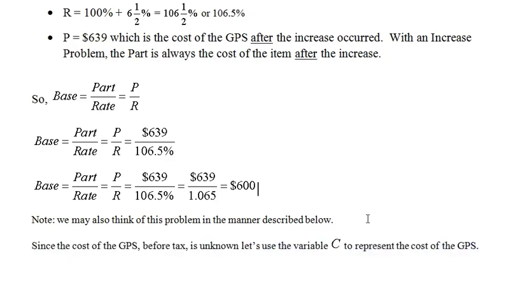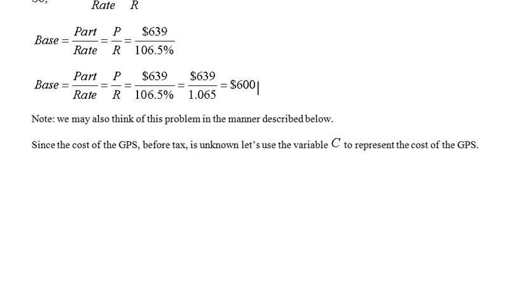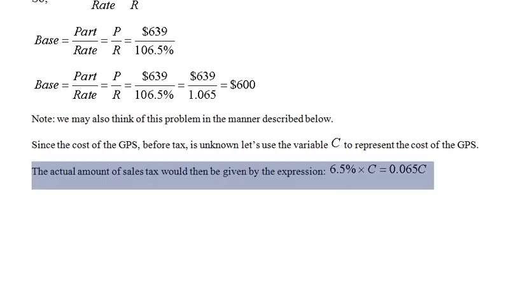Since the cost of the GPS before tax is unknown, let's use the variable C to represent the cost of the GPS. The actual amount of sales tax would then be given by the expression 6.5% times C, which we may think of as 0.065C.